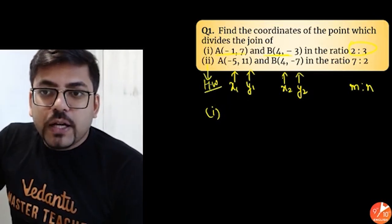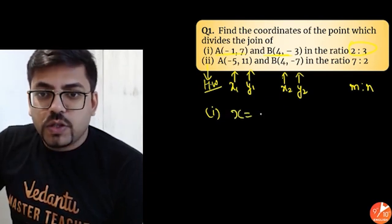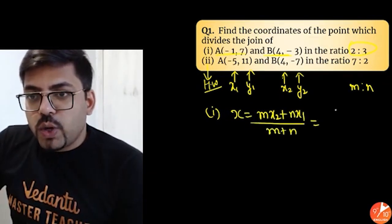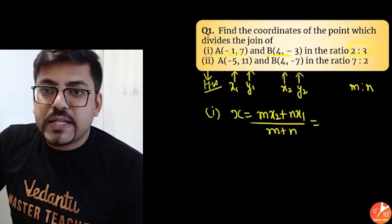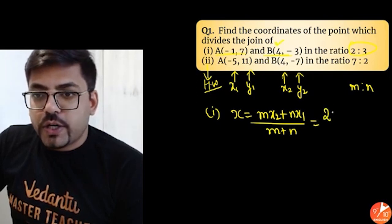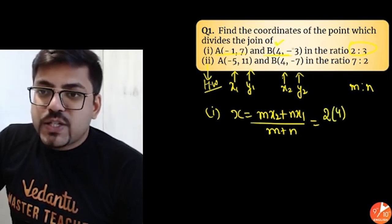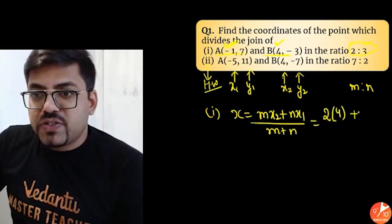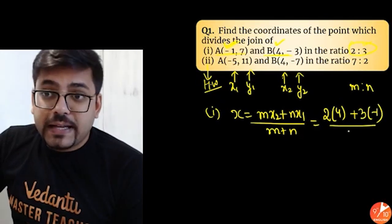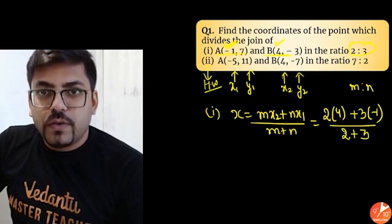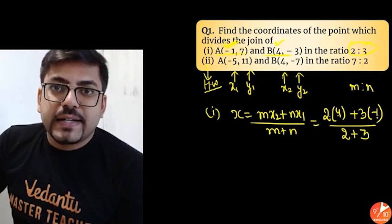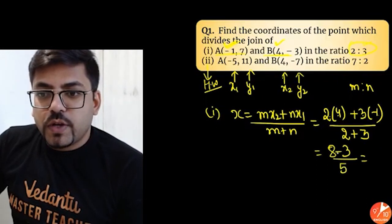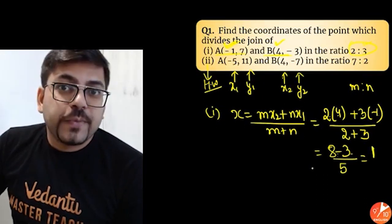For the first one, we have to find the coordinates of the dividing point. So X — we know the formula — is M·X2 plus N·X1 divided by M plus N. What is M? It is 2. So 2 into X2, which is 4. That gives 2 into 4 plus N·X1. N is 3 and X1 is minus 1, so plus 3 into minus 1, all divided by M plus N which is 2 plus 3. So we get 2 fours are 8 and 3 into minus 1 is minus 3. So 8 minus 3 is 5, divided by 5. Answer is 1. This we got for X.